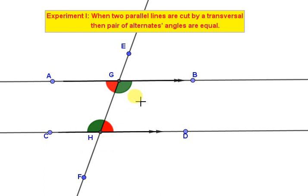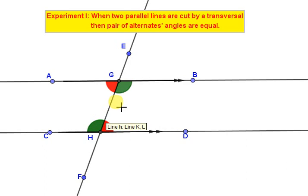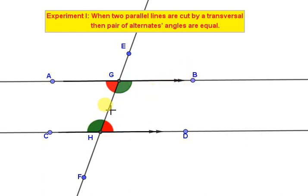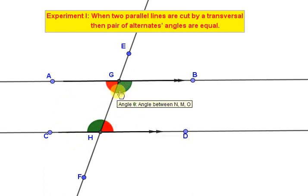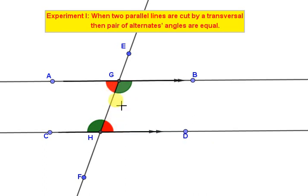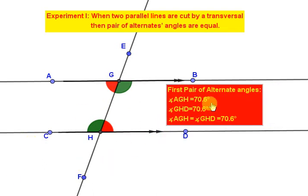Here you can see these two pairs of angles. The green angles — angle BGH and angle CHG — are a pair of alternate angles. The angles indicated by red color are also another pair of alternate angles. Let's look at the first pair of alternate angles.